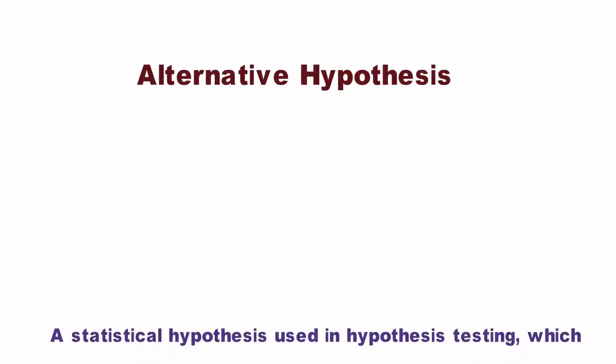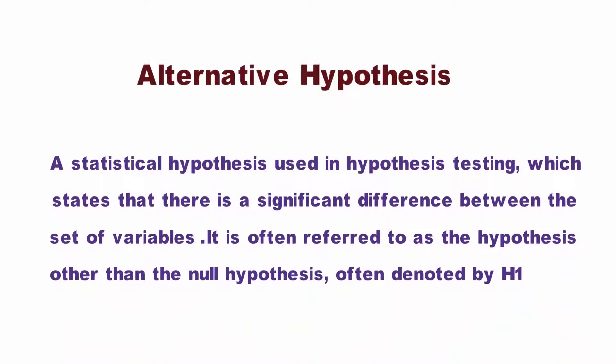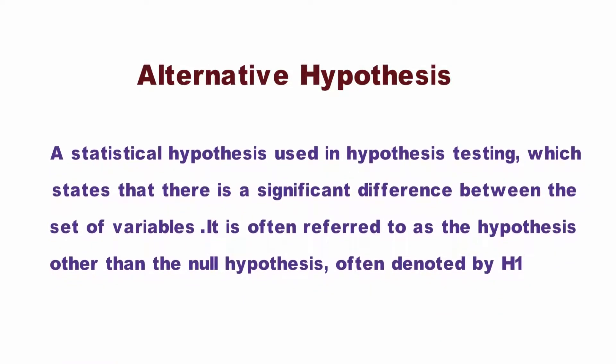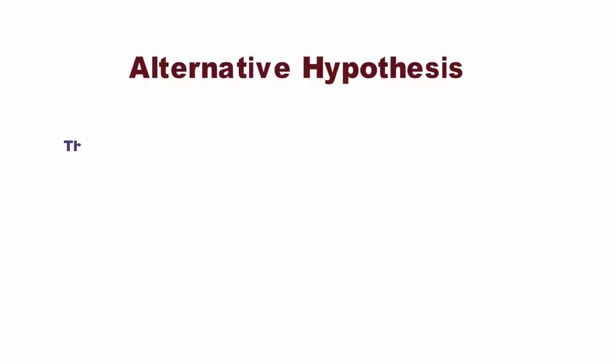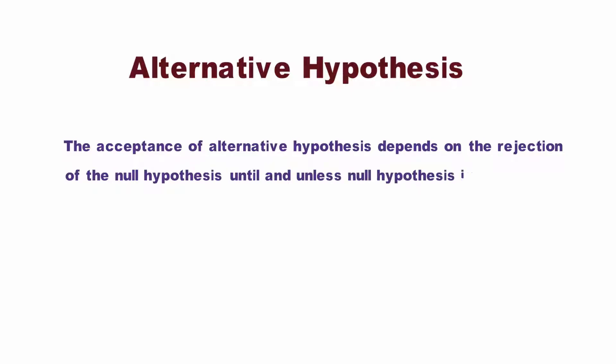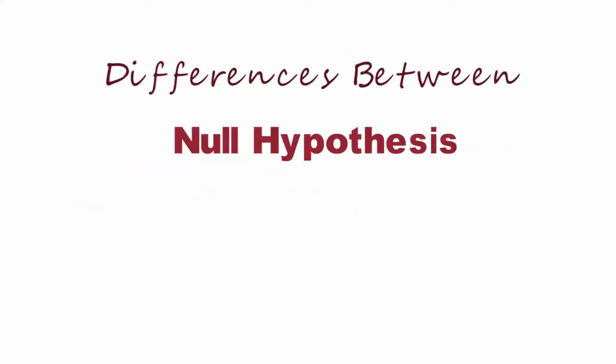What is alternative hypothesis? A statistical hypothesis used in hypothesis testing, which states that there is a significant difference between the set of variables. It is referred to as the hypothesis other than the null hypothesis, often denoted by H1. The acceptance of alternative hypothesis depends on the rejection of the null hypothesis. Until and unless null hypothesis is rejected, an alternative hypothesis cannot be accepted.